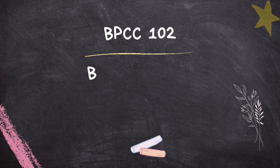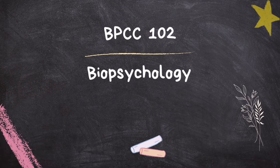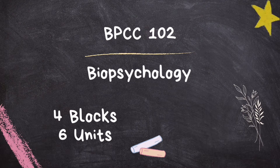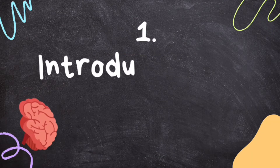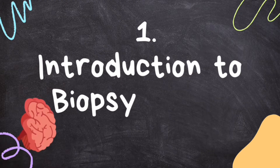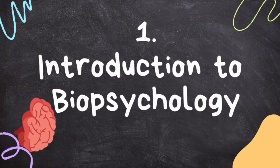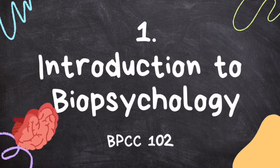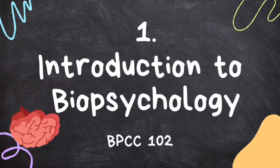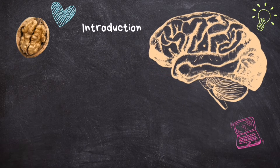This series is all about BPCC 102, that is Biopsychology. It is a core course in the first year of BAPsych. It has four blocks and six units in total, and today we are starting with Unit 1: Introduction to Biopsychology. Have you ever seen a picture of the human brain? I'm sure you have.